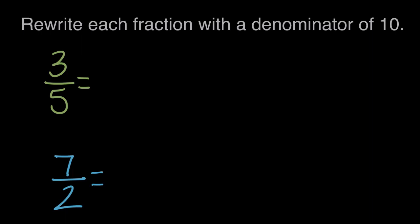Rewrite each fraction with a denominator of 10. So we have two fractions, 3 fifths and 7 halves, and we want to take their denominators of 5 and 2 and change them to be a common denominator of 10.